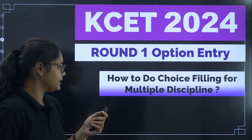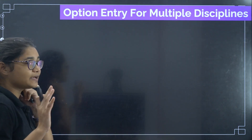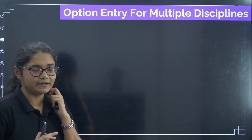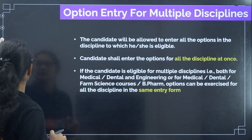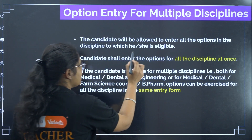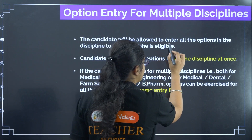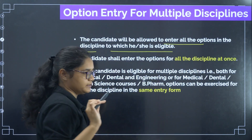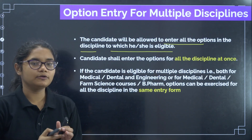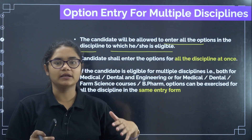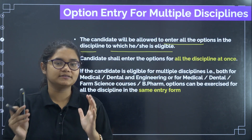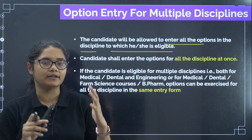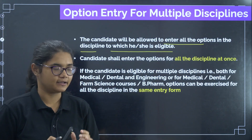Now let us start with some important instructions and examples. The first one is: the candidate will be allowed to enter all the options in the discipline to which he or she is eligible. For example, if you are eligible for engineering, you can enter all the options available in engineering. If you are eligible for medical, you can enter all the options available in medical.